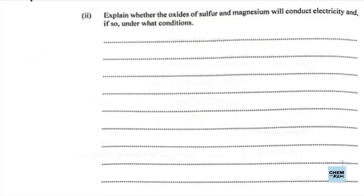Part 2 of 4A: explain whether the oxides of sulfur and magnesium will conduct electricity, and if so, under what conditions. So let's tell them — starting with the oxides of sulfur.